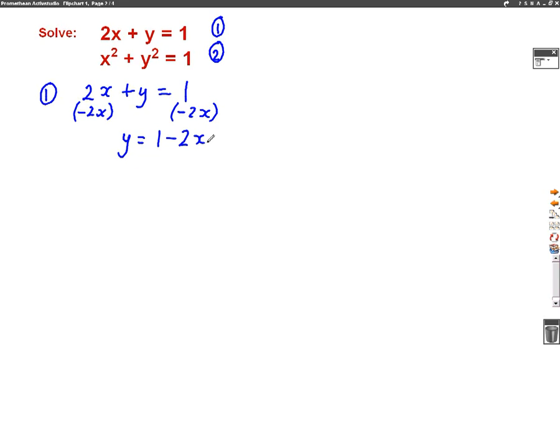So I've rearranged number 1 and I've come up with the equation y equals 1 minus 2x. What I'm going to do is substitute that into the second equation. So where I see this y here, I'm going to write 1 minus 2x. So we're going to do this by substitution. So equation number 2 becomes x squared plus, well, where it says y, we're now writing 1 minus 2x squared, and that equals 1.